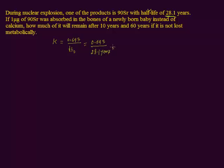Dividing 0.693 by 28.1, you get k = 0.0247 per year.